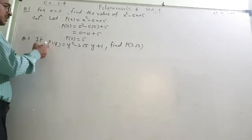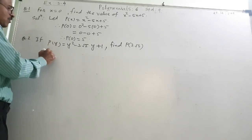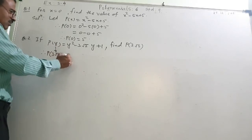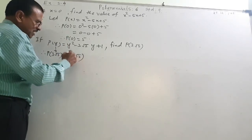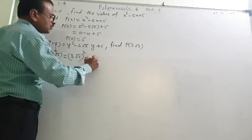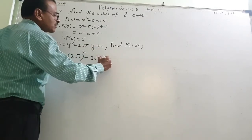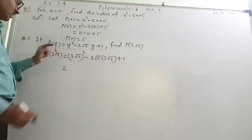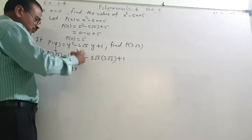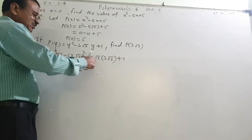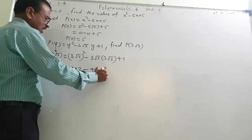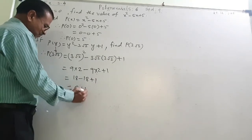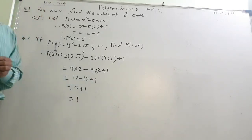So, this is p of y. Therefore, p of 3 root 2 means at the place of y I will put this value. That is equal to: y square means 3 root 2 squared, minus 3 root 2 into 3 root 2, plus 1. That is equal to: 3 square is 9, into root 2 square is 2 — so 18 — minus 3 into 3 is 9, root 2 into root 2 is 2 — so 18 — plus 1. 18 minus 18 is 0, plus 1. And that is p of 3 root 2 is equal to 1.